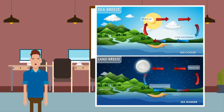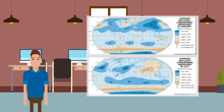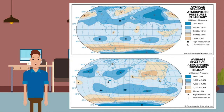Oceans behave differently to land when they absorb the sun's energy and heat up, which causes pressure differences between the land and the sea. Land generally absorbs sunlight more and heats up quickly in summer months, causing low pressure over land as hot air rises. The sea reflects more heat and takes longer to heat up, forming areas of high pressure. The opposite happens in winter — land loses energy quickly causing high pressure, whereas seas take longer to cool, meaning they are relatively low pressure. In January it is winter in the northern hemisphere but summer in the southern hemisphere, and vice versa in July, which is why the patterns are reversed.